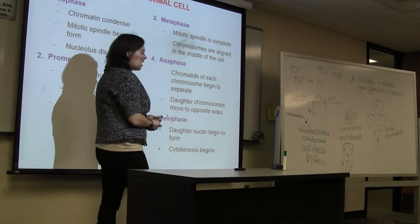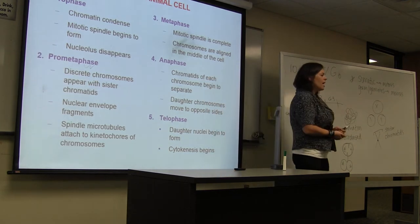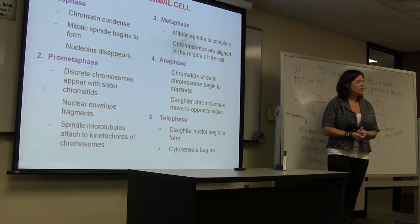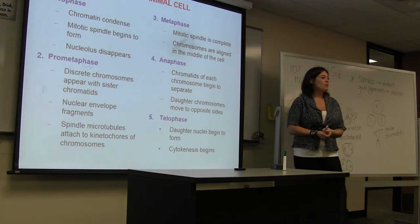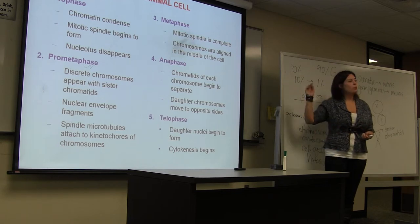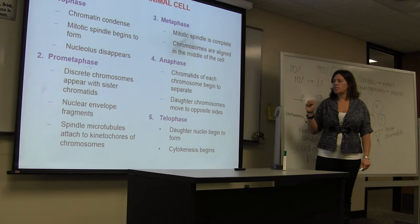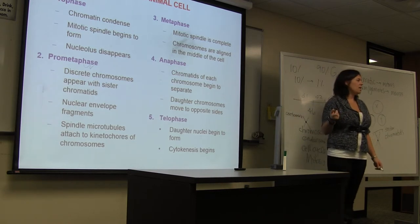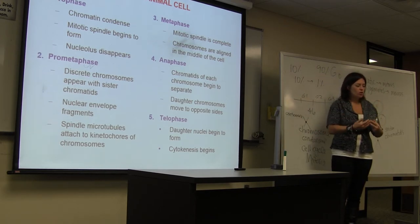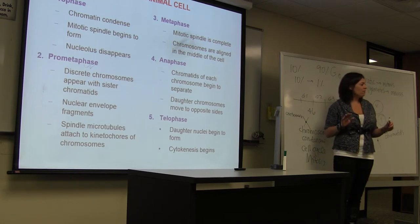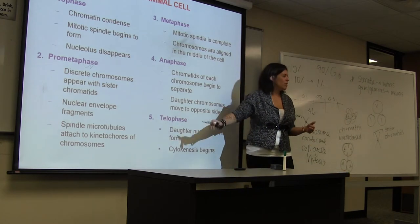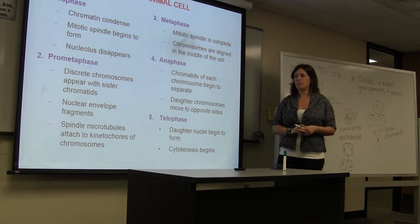There are five different stages of mitosis, and these are going to be pretty much the exact same thing that happens in plant cells as well. Plant cells and animal cells have the same process going on in mitosis. The only thing that's going to differ is how the cytoplasm actually divides — it's the cytokinesis that has a little bit of difference in plant and animal cells.